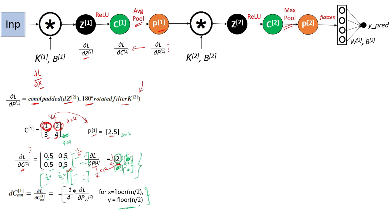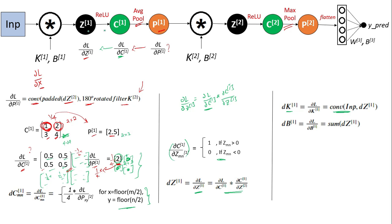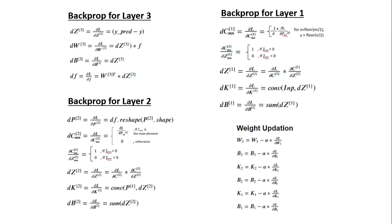This can be written compactly with a single equation. Once we have del L by del C1 we obtain del L by del Z1 by chain-rule multiplication: dZ1 equals del L by del C1 element-wise multiplied by del C1 by del Z1, where del C1 by del Z1 is the ReLU derivative as before. And once we have dZ1, del L by del K1 is obtained via convolution of the input image with dZ1, and del L by del B1 by summing the dZ1 matrix.